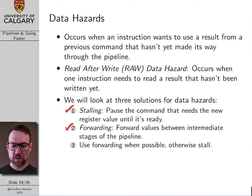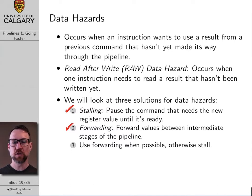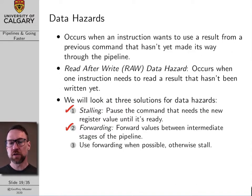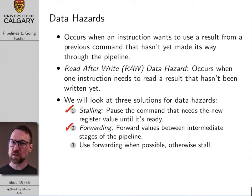Another solution is called forwarding. With forwarding, we basically forward values between intermediate states of the pipeline. Often the result that the next instruction needs is actually ready — it just hasn't been fully written back to its register yet. For example, it might be available at the output of the ALU, but it's still two more clock cycles before it's written to its register. We can be sneaky and take the value at the output of the ALU and send it back to a previous stage to make use of it. This makes our logic design tricky, but it allows us to eliminate data hazards in many cases without any performance penalty at all.